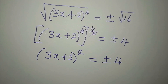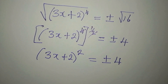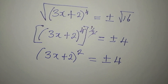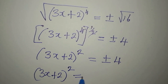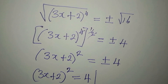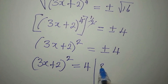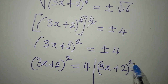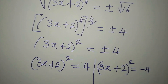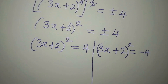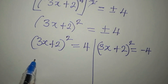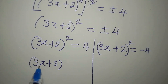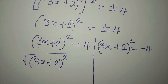There is still more to do. We can take the square root of both sides again. We consider this as two separate equations. The first equation is (3x + 2)^2 = 4, picking the positive 4. The second equation is (3x + 2)^2 = negative 4.